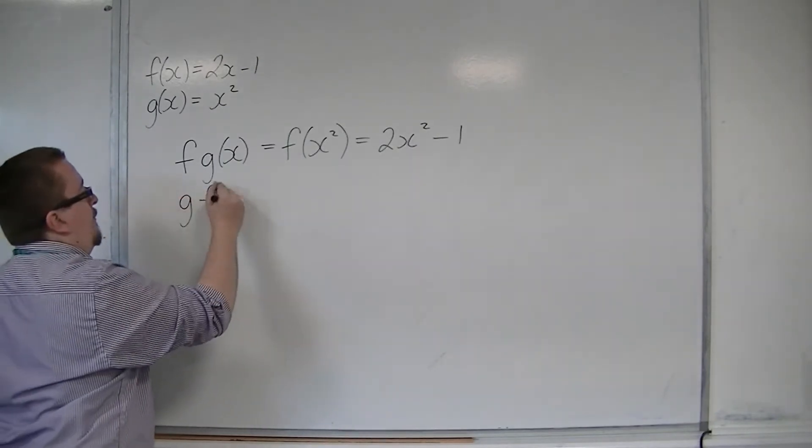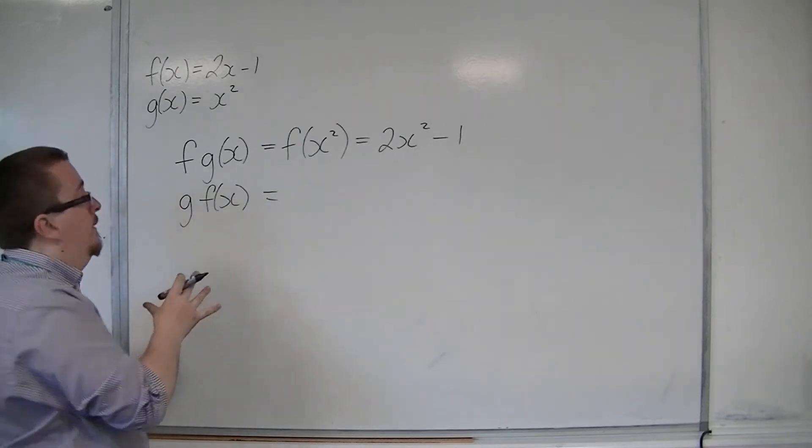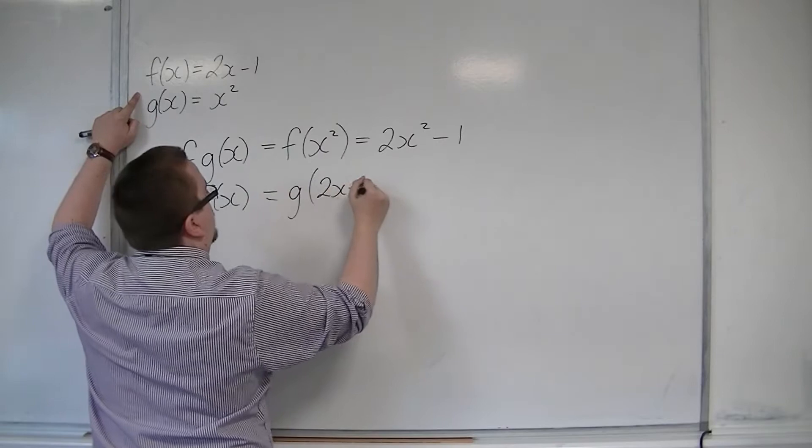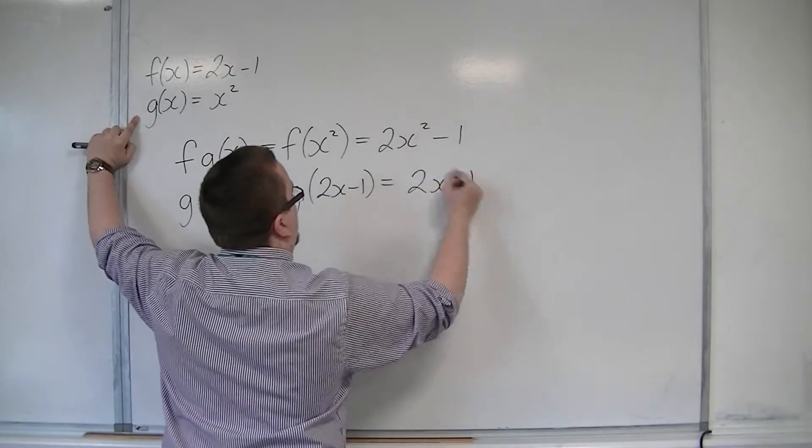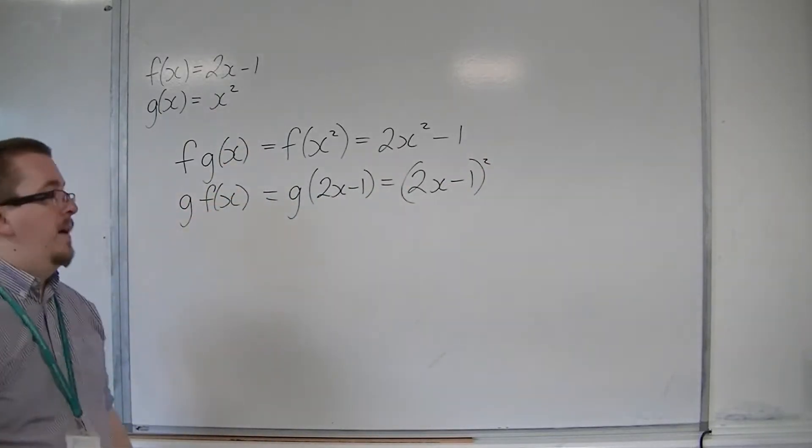If I look at g f of x, this time I'm putting f of x into g. So f of x is 2x minus 1. This would be 2x minus 1 all squared, replacing that x with 2x minus 1.